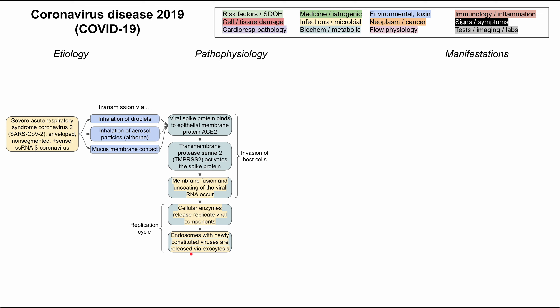This begins the replication cycle. Eventually, once the cellular enzymes release the replicated viral components, endosomes inside the host cell with newly constituted viruses are released via exocytosis. Those viruses can then repeat this process, binding to new epithelial cells with membrane protein ACE2, and the infection perpetuates within the host.